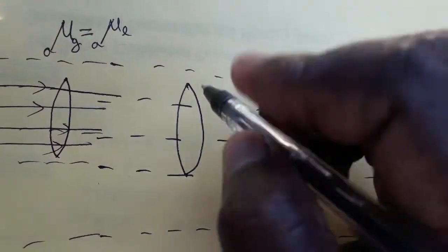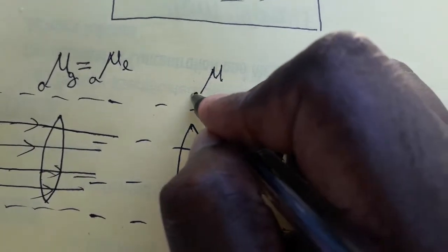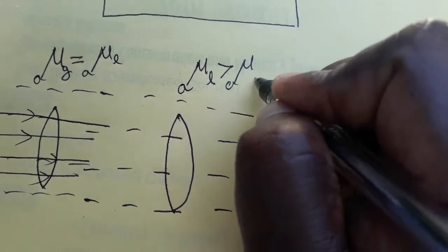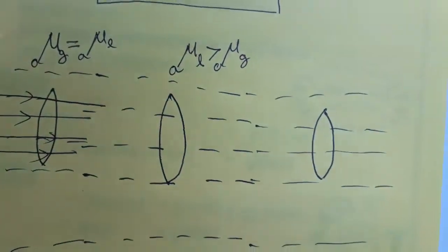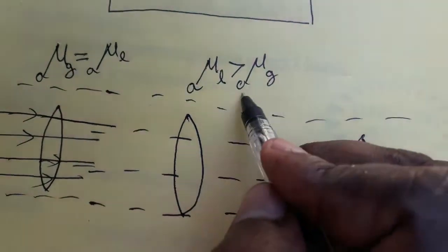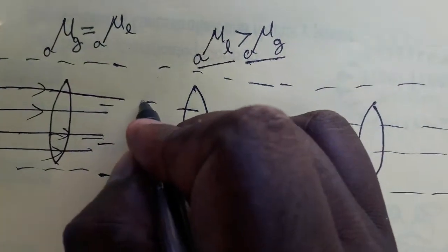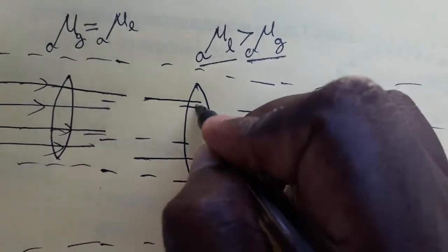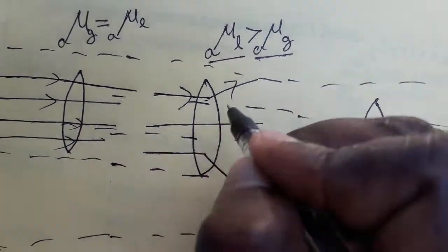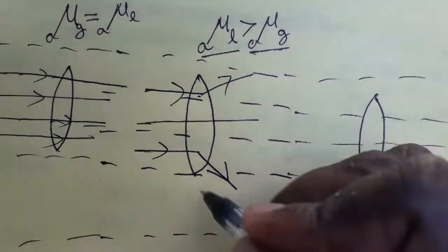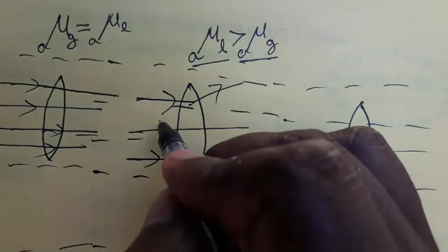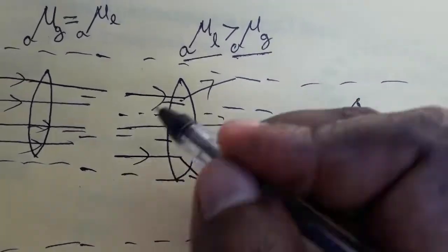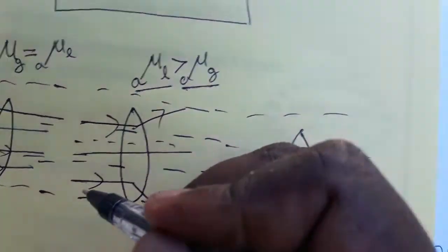Second case: the convex lens is placed inside a liquid whose refractive index is greater than the glass refractive index. Normally, glass has a higher refractive index than liquid, but in this case, the glass refractive index is less than the liquid. So the convex lens will behave as a concave lens — it will produce divergent rays. The reason is that the outside medium has a higher refractive index than the inside medium, so it behaves as the opposite nature.